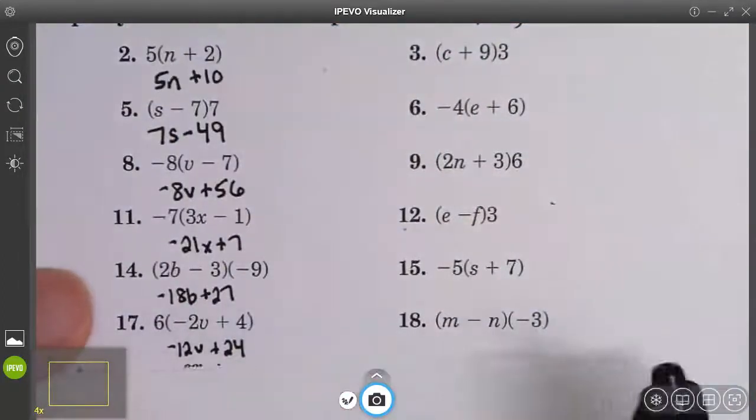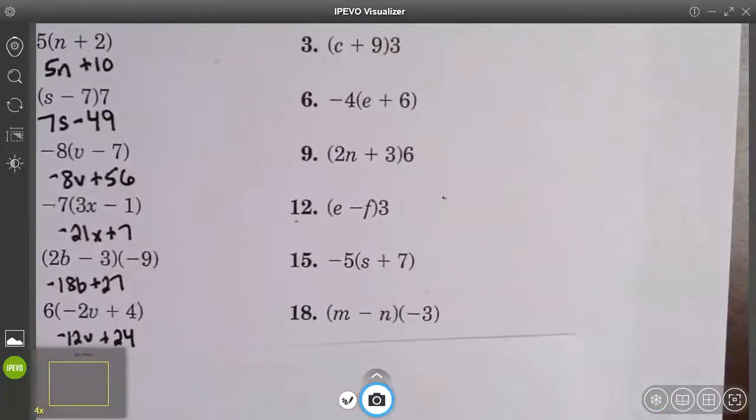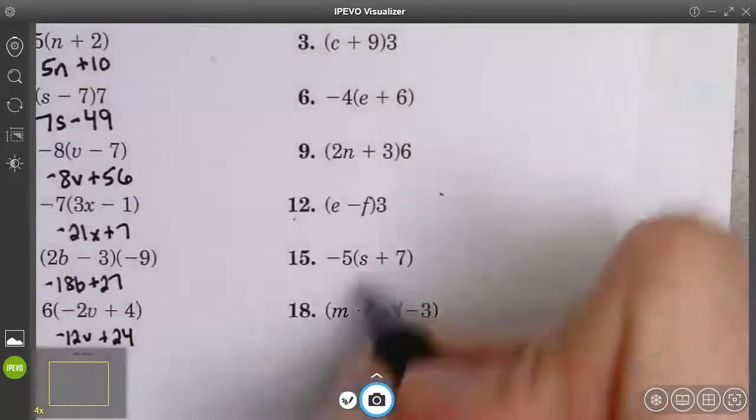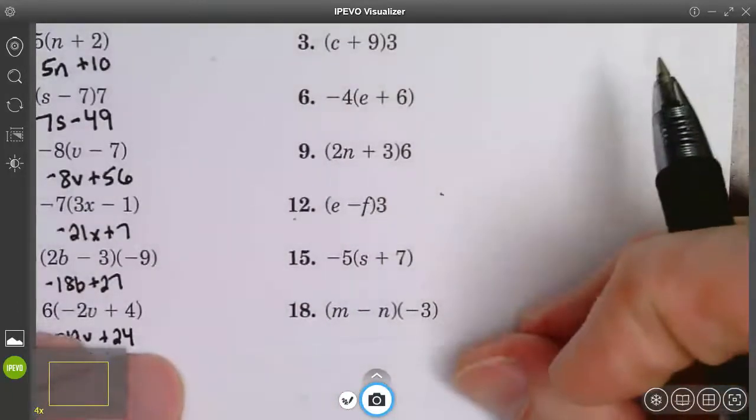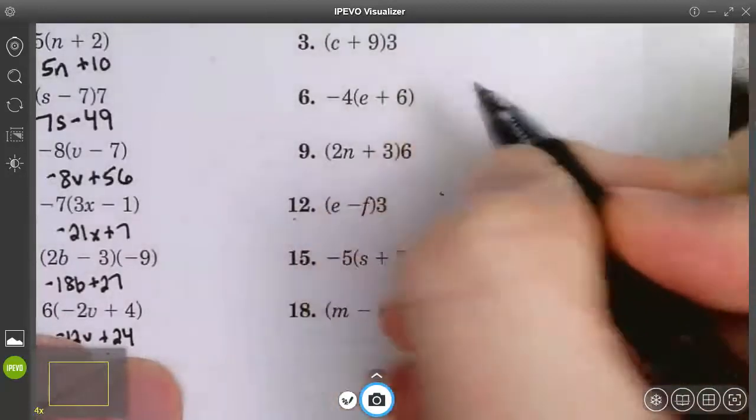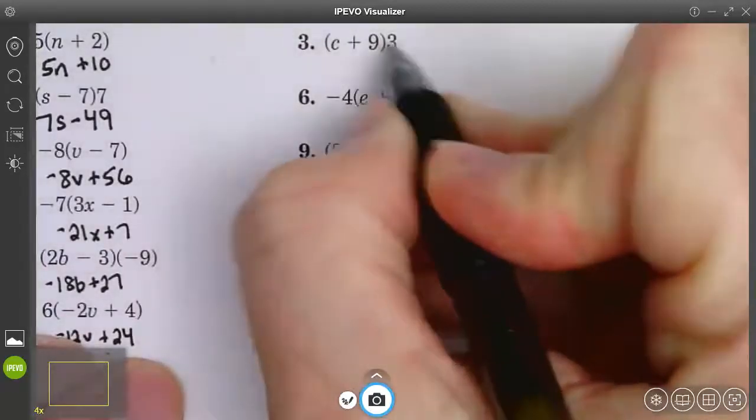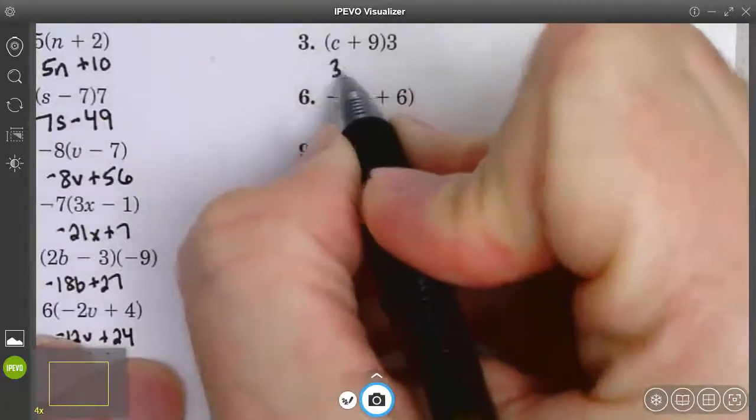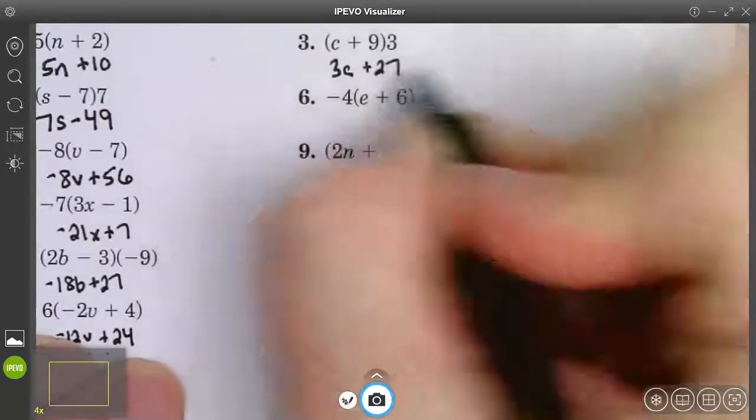One more set of six. We are simplifying expressions. These are all algebraic expressions because they contain variables. Here's a spot to pause. 3 times c is 3c. 3 times 9 is positive 27.